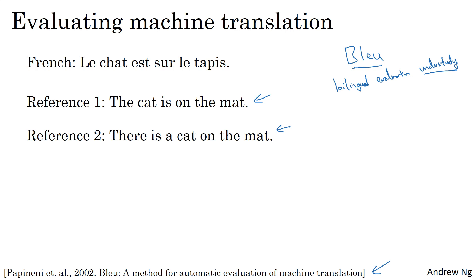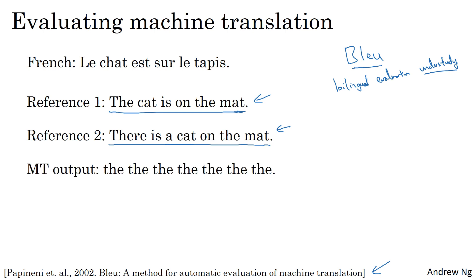The intuition behind the BLEU score is we're going to look at the machine-generated output and see if the types of words it generates appear in at least one of the human-generated references. These human-generated references would be provided as part of the dev set or test set. Now let's look at a somewhat extreme example. Let's say the machine translation output — abbreviating machine translation as MT — is 'the the the the the the the.'